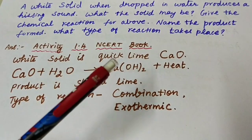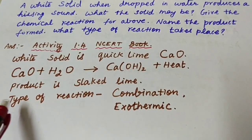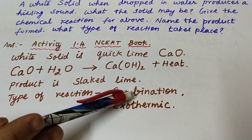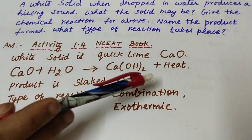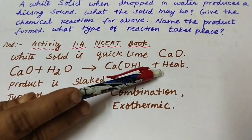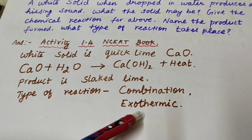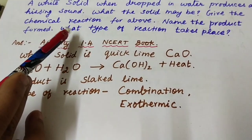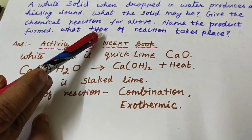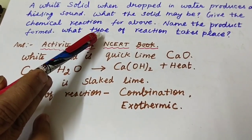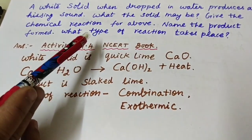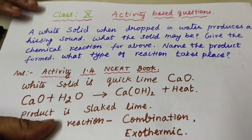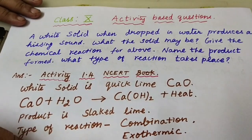The type of reaction taking place is combination as well as exothermic, since heat energy is given out. In almost all activity-based questions, after writing the equation you need to identify the type of reaction. There is a useful hint for how to find out the type of reaction.